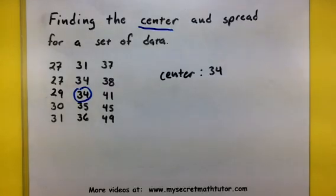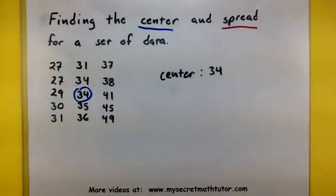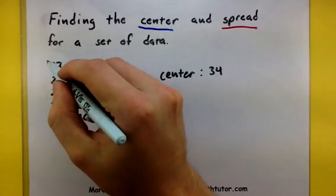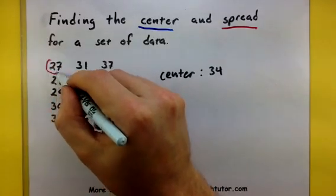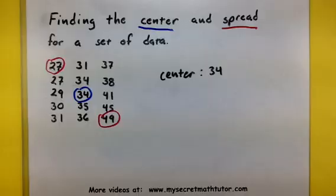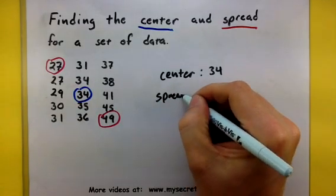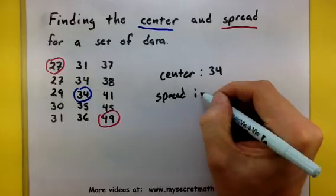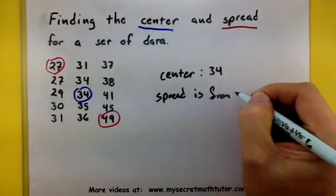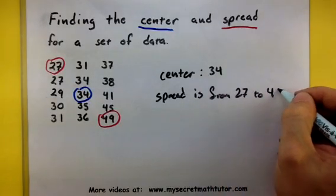Now, the spread, or the range, gives us information about our lowest and our highest value. We can read from our data that the lowest value is 27 and the highest value is 49. So I would say that the spread is from 27 to 49.